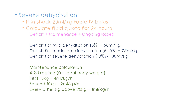For ongoing losses, we give the volume of fluid that is lost. We estimate that in one episode of diarrhea, 50 ml of water is lost, so with each episode we add another 50 ml to the calculation.